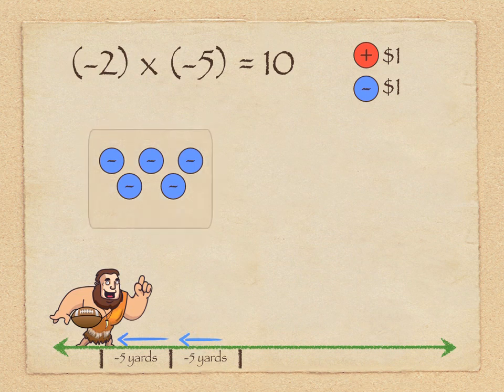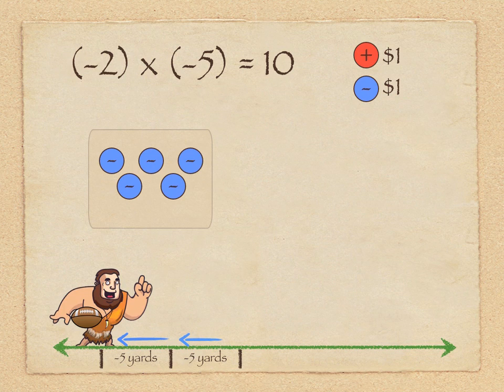Let's look at the example of negative 2 times negative 5 equaling 10. And that's a really confusing idea for many of us, trying to figure out why two negatives, when you multiply two negatives together, why the product is positive.